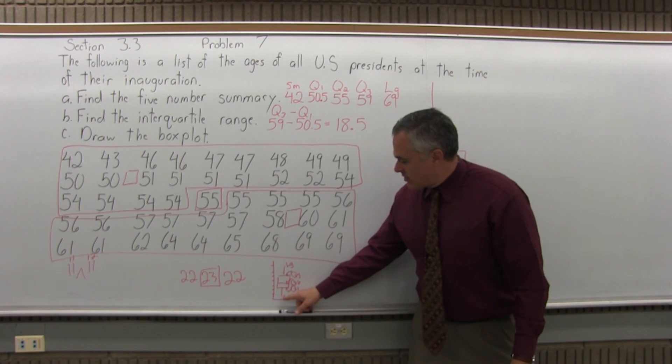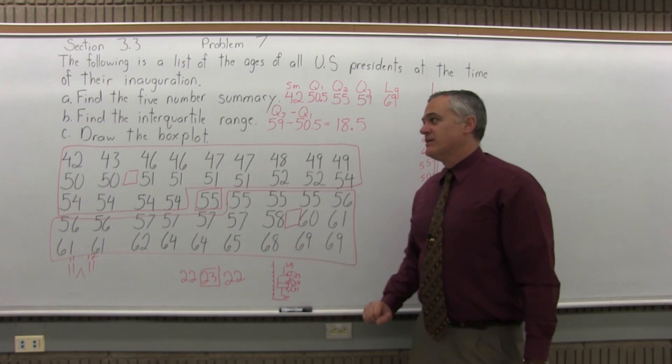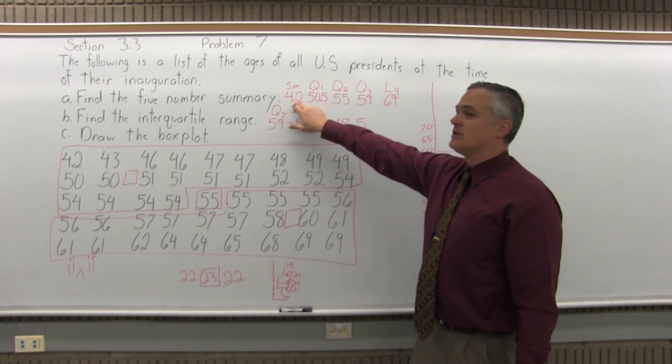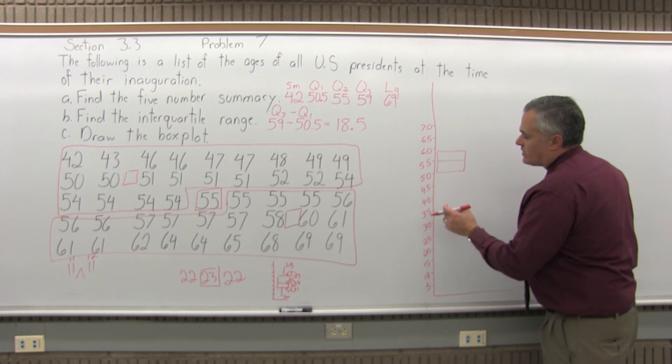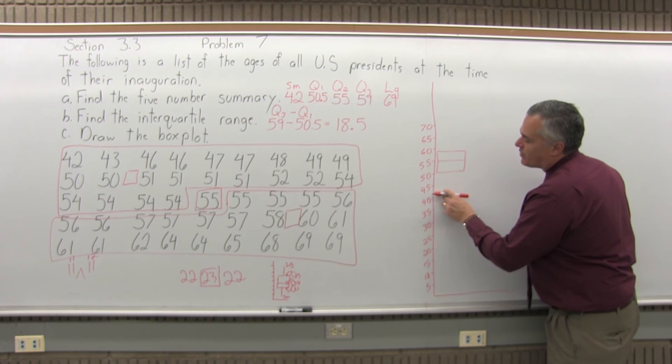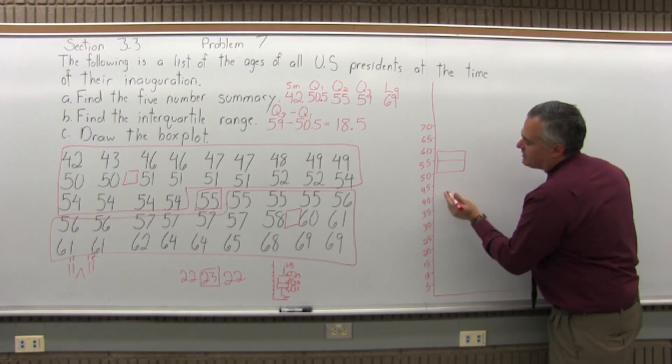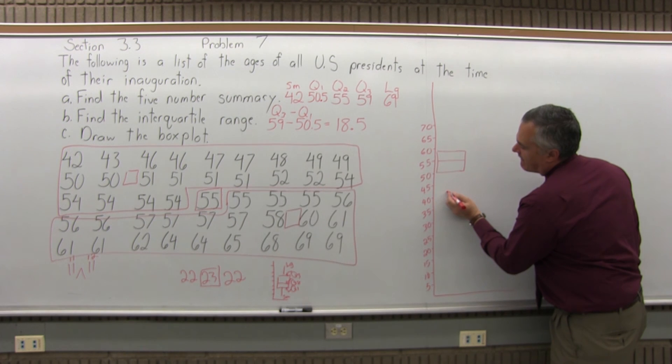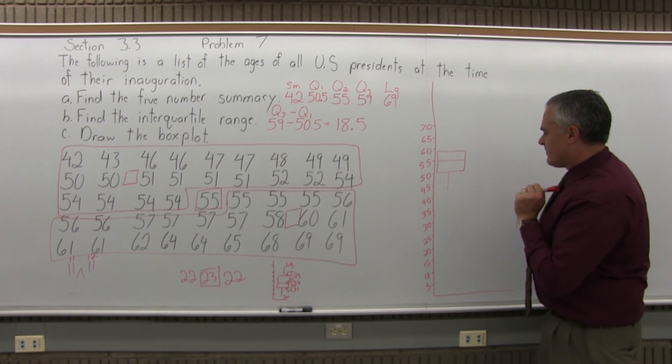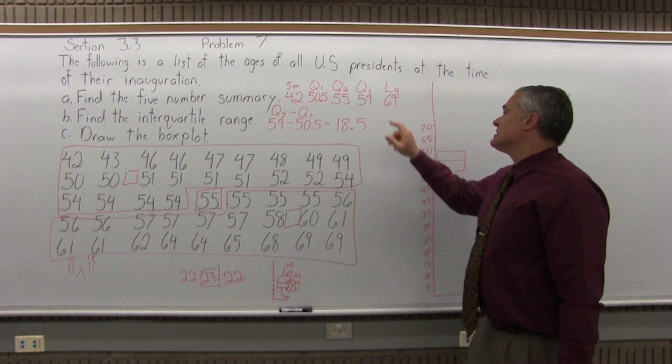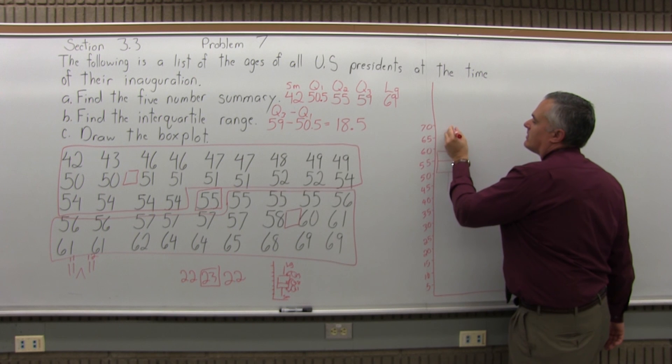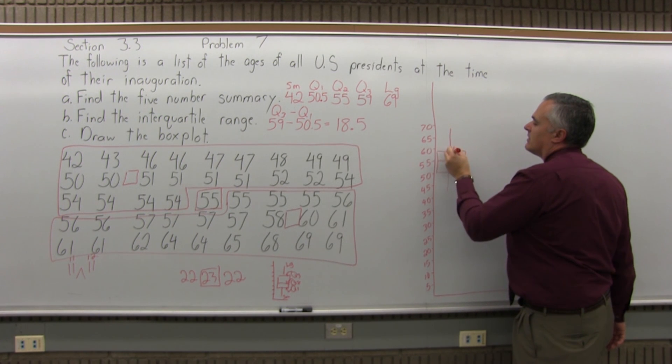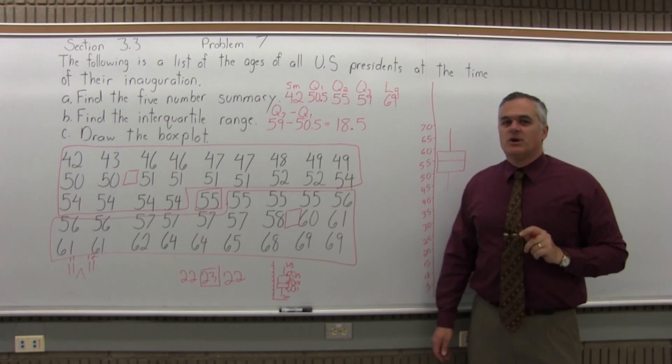Now I'm going to have a line coming out of the bottom of the box, going to the smallest data value. Our smallest data value for this problem is 42. That would have been Teddy Roosevelt. So 42, I don't have 42 exactly on my number scale. 42.5 would be right between the 40 and the 45, so 42, tiny bit lower than the halfway point. About like that. The oldest president, 69. I don't have 69, so figure 70 and go a little bit lower. And that would be the box plot.